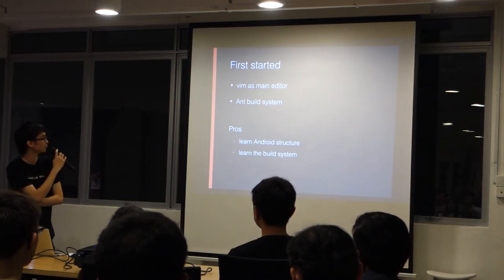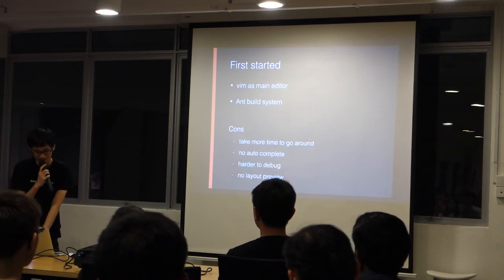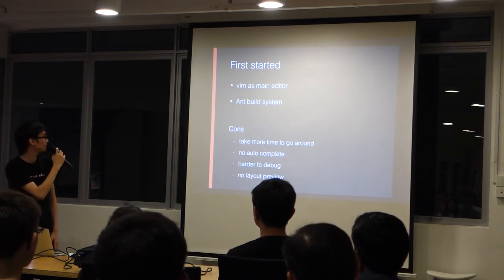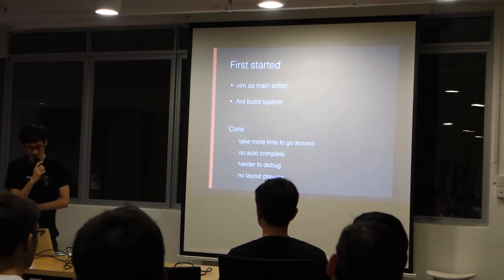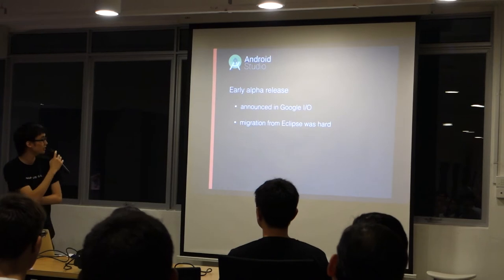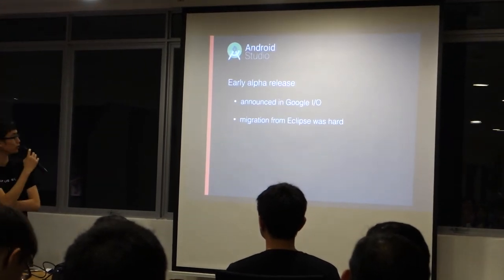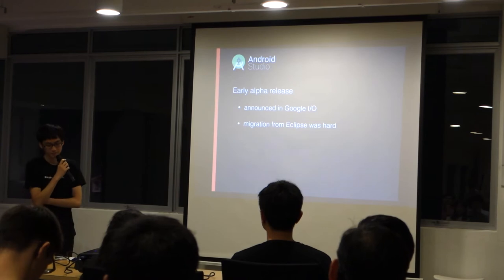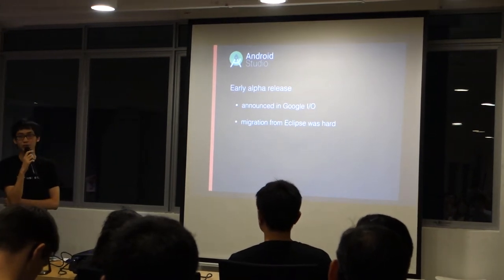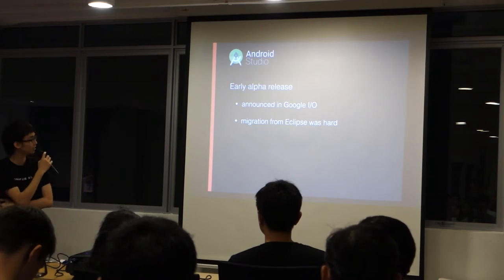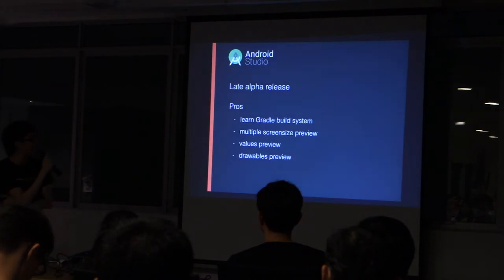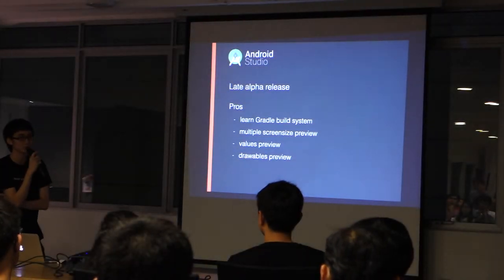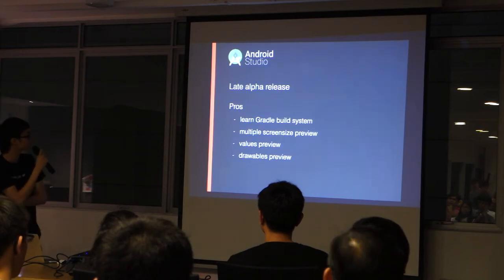I had no choice but to move to Eclipse. The cons of Beam is that it takes more time to navigate, there's no auto-complete, it's harder to debug, and there's no layout preview. Fast forward to the early release of Android Studio, announced at Google I/O. At that time, migration from Eclipse was quite bulky, so I had to wait until the late alpha release before I was able to migrate the entire project to Android Studio.